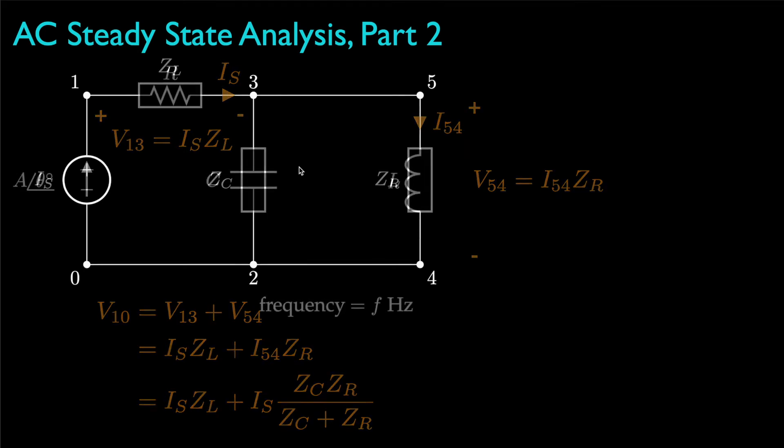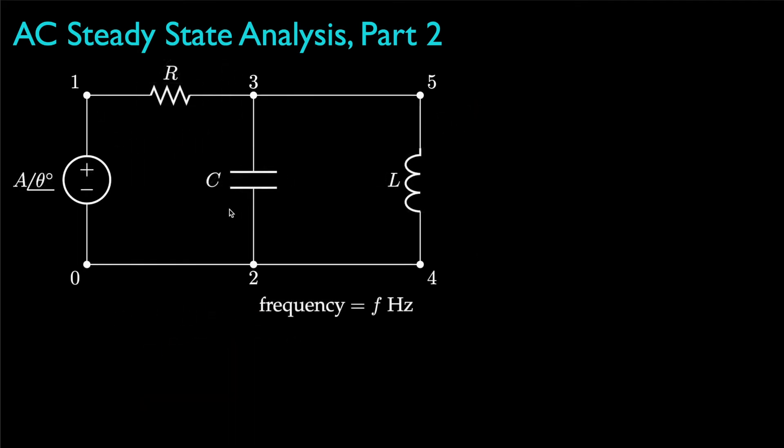Now, let's look at another example that has a voltage source along with a resistor, a capacitor, and an inductor. And again, if we use the source frequency to determine the impedances for all of the elements, we can redraw the circuit like this and solve for the circuit's currents and voltages.